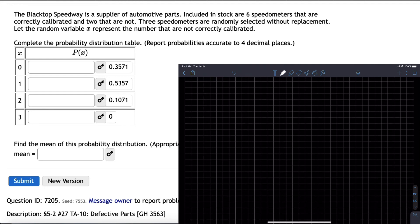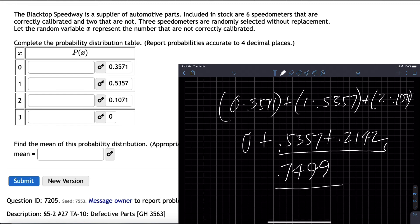To find the mean, take zero and multiply it times 0.3571, but that's zero. Add that to one times 0.5357, and then add that to two times 0.1071, which is 0.2142. So this adds up to 0.7499. Now I'm wondering, are they going to ask for 0.75?